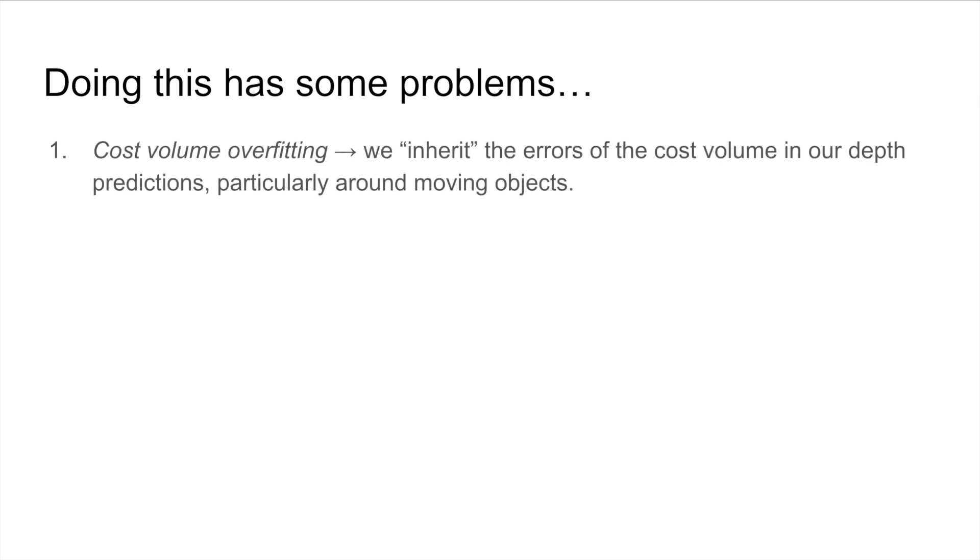First, we observe cost volume overfitting, whereby our network inherits all of the errors of the cost volume, particularly around moving objects.